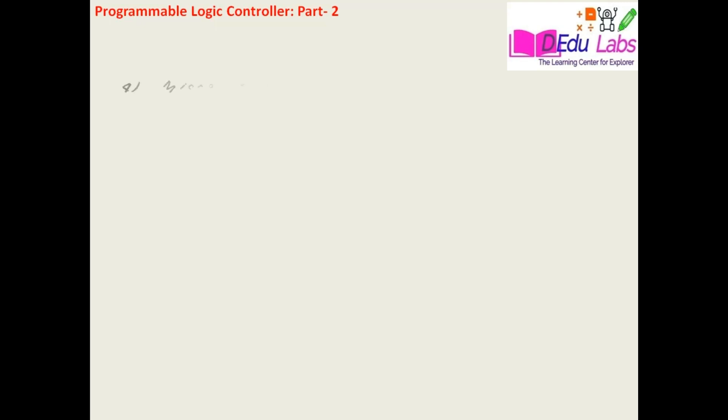Question number four: Micro PLC has blank inputs and outputs pins. Option A is 16, Option B is 50, Option C is 32, Option D is 70.